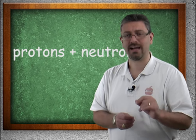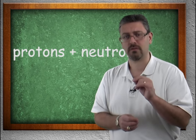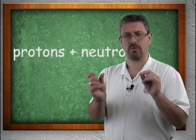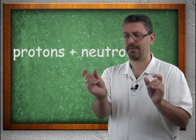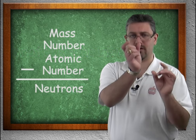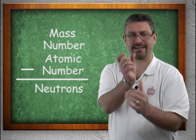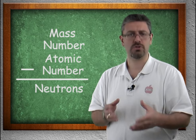So if you want to find out the number of neutrons, you have a mass number, you have an atomic number. You take the mass number, move it up, take your atomic number, move it under, and subtract. And there you have your neutrons.